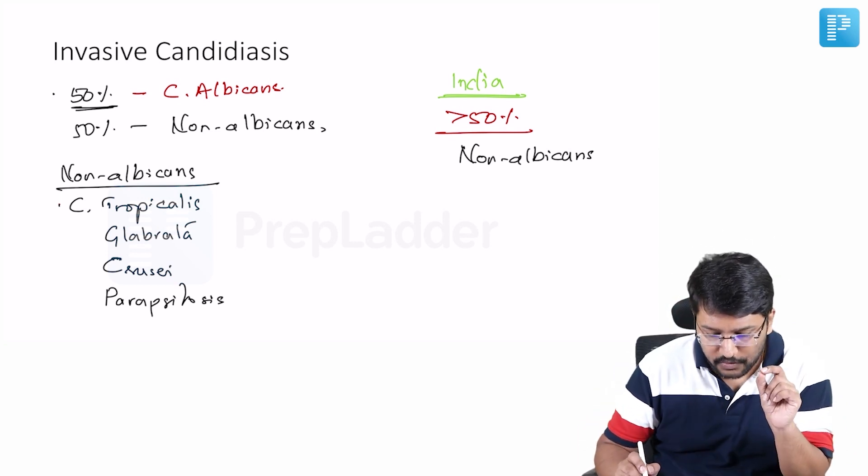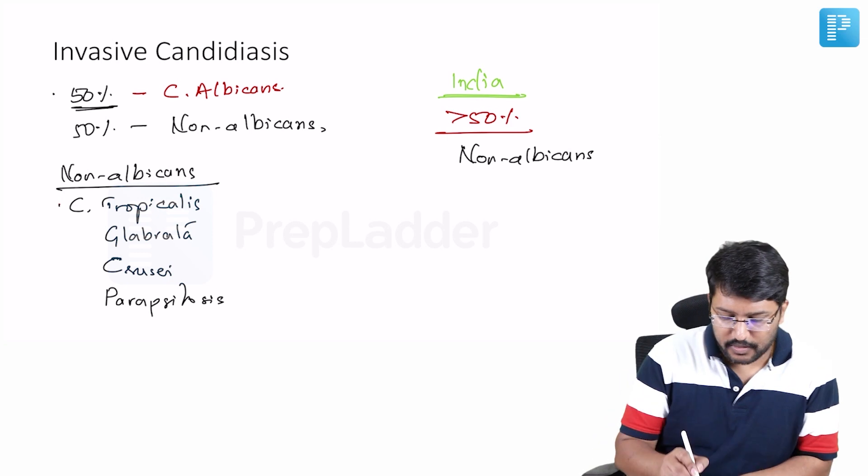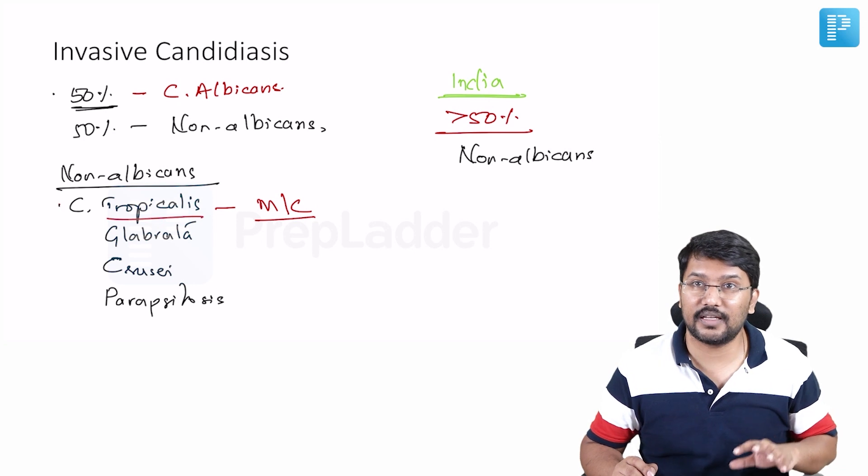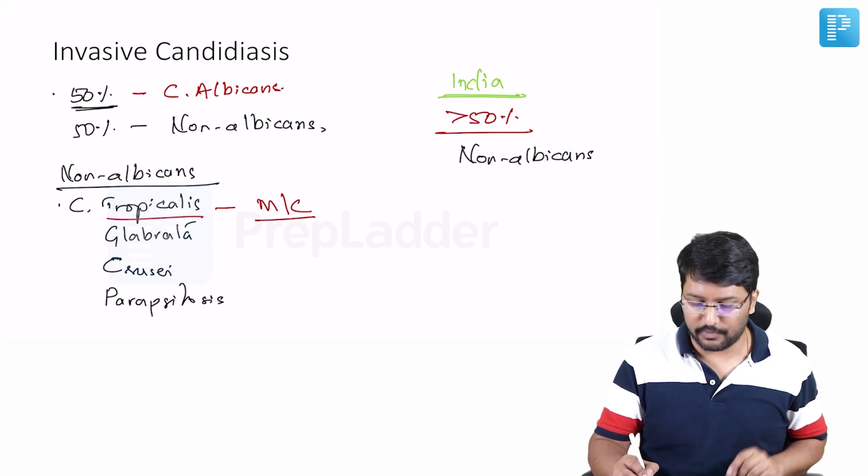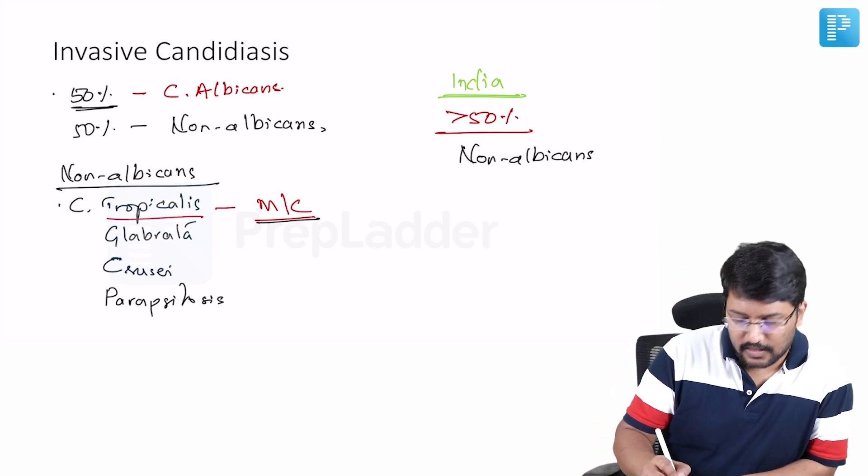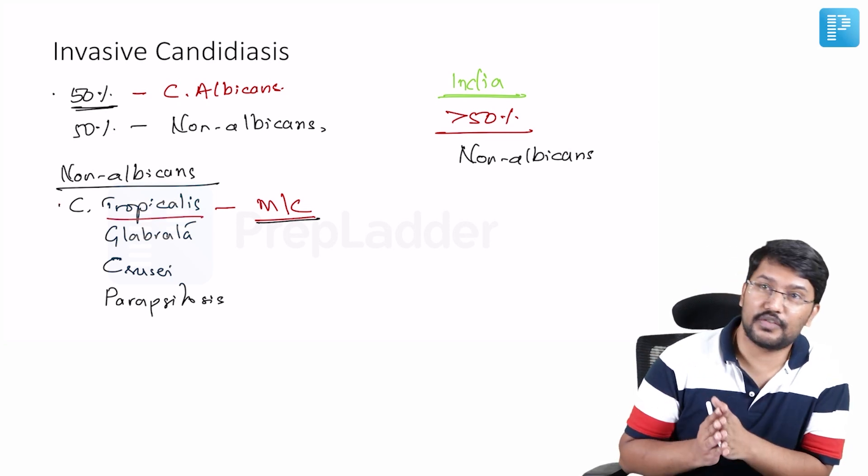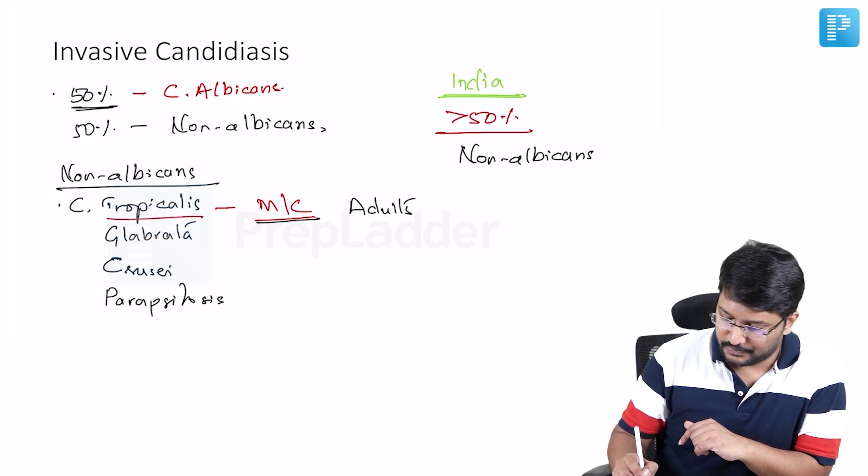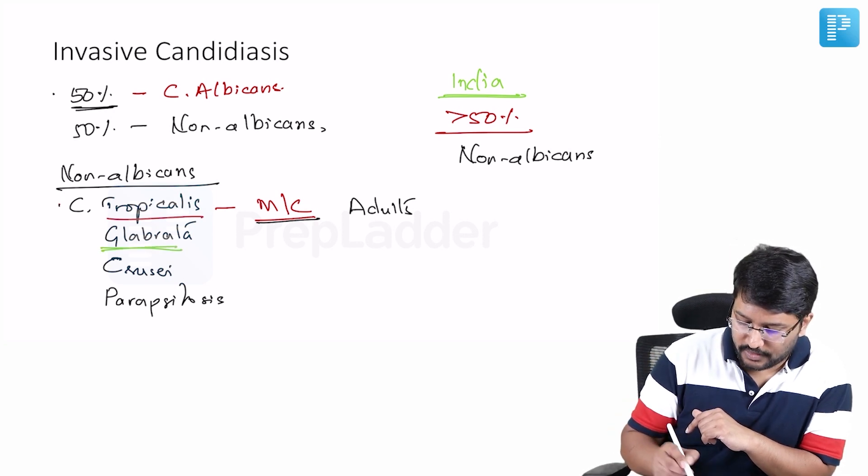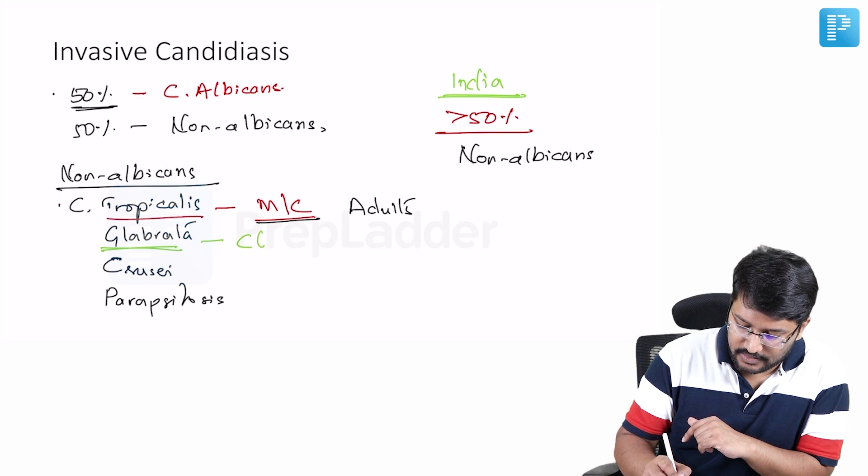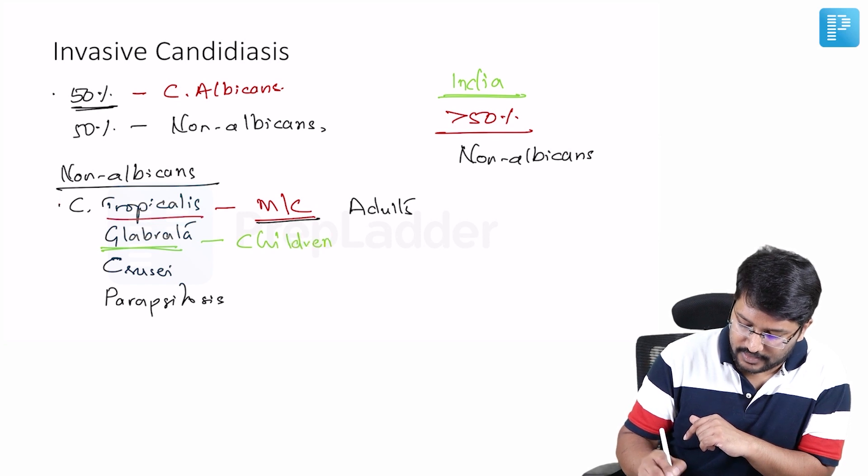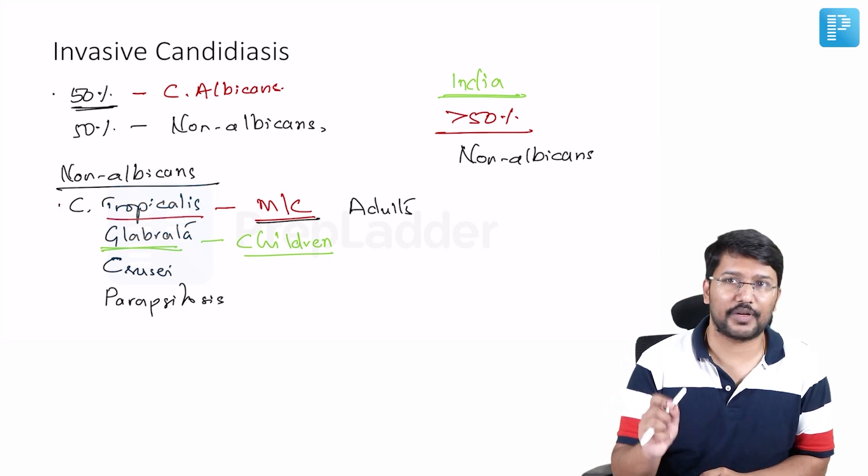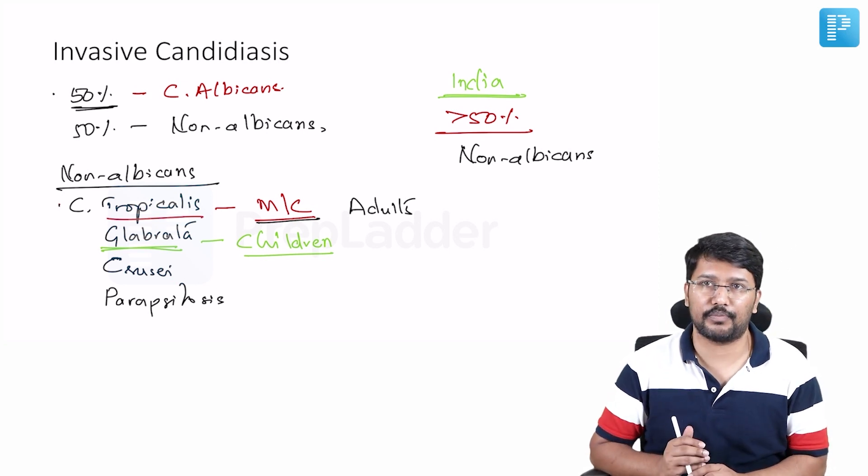Now, you want to particularly remember Candida tropicalis because this is the most common non-albicans isolate from India. And this is the most common non-albicans Candida responsible for invasive candidiasis in India, especially adults. In children, we very often isolate, especially neonates and children, we often isolate Candida glabrata. So among the adults, the most common isolate is Candida tropicalis, an important MCQ point you should remember.